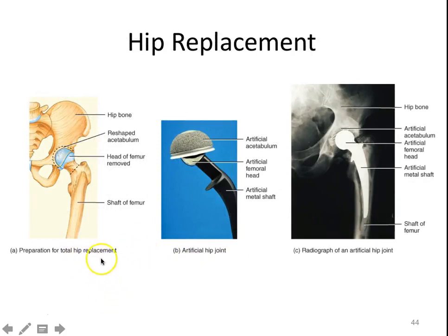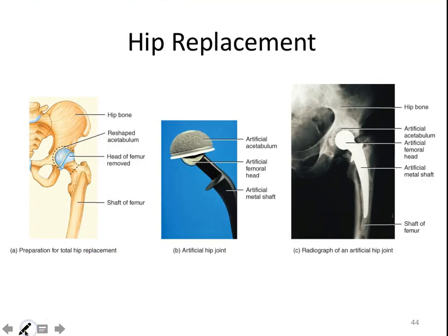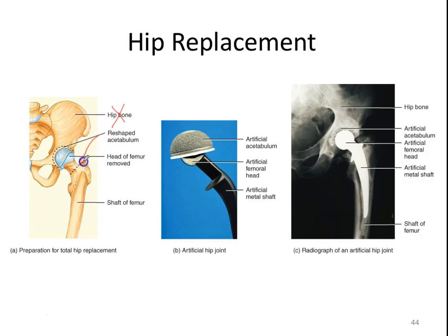Here's a hip replacement. When we talk about someone — especially an elderly individual — breaking their hip, we're not talking about the hip bone itself. Usually where the break occurs is right in the neck of the femur, although it can occur in different places. That tends to be the most common point.